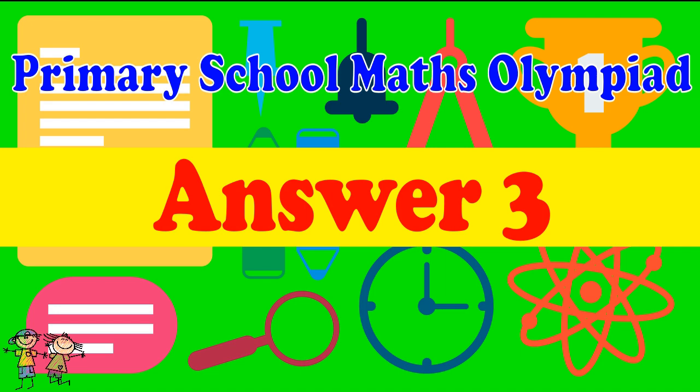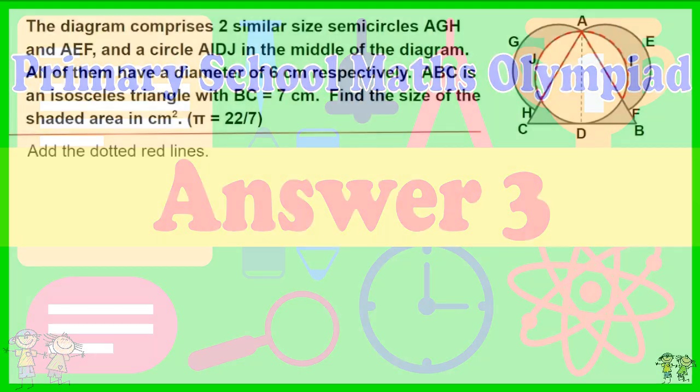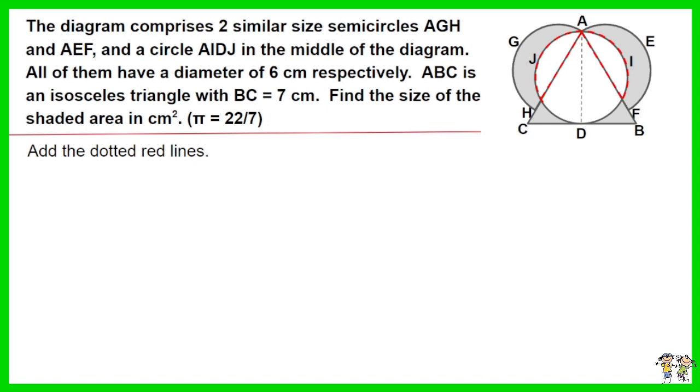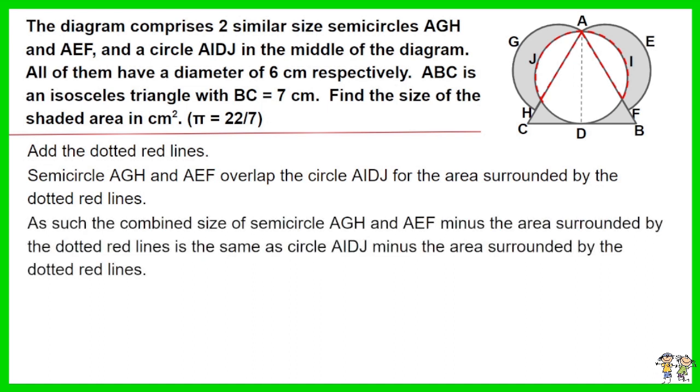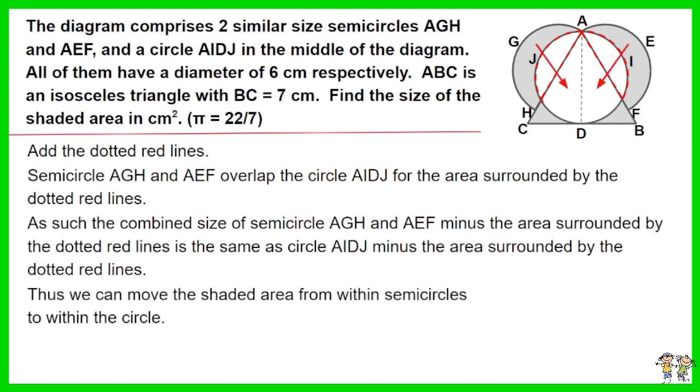Answer for question 3. Add the dotted red lines. Semicircle AGH and AEF overlap the circle AIDJ for the area surrounded by the dotted red lines. As such the combined size of semicircle AGH and AEF minus the area surrounded by the dotted red lines is the same as circle AIDJ minus the area surrounded by the dotted red lines.